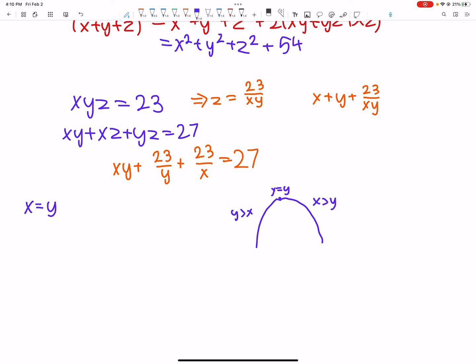So, we plug in x equals y. We get x squared plus 46 over x is 27. Now, we multiply by x, so we get x cubed minus 27x plus 46 is 0. And we just factor this. We get, it's pretty simple, you just test integer roots. 2 is a root.